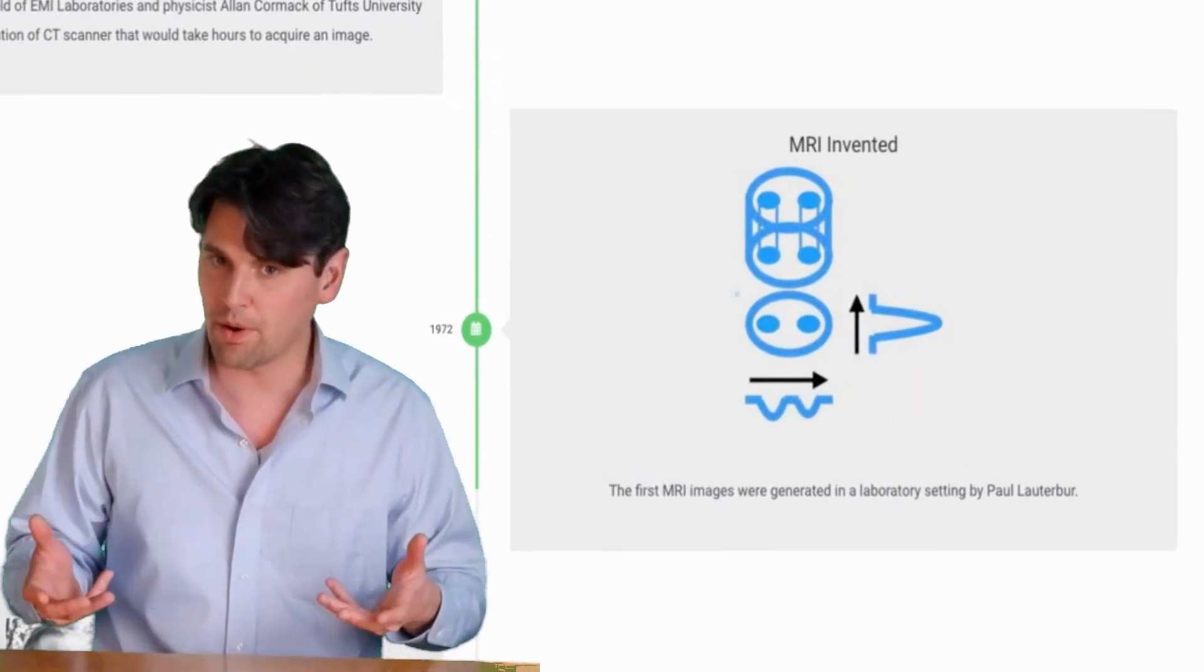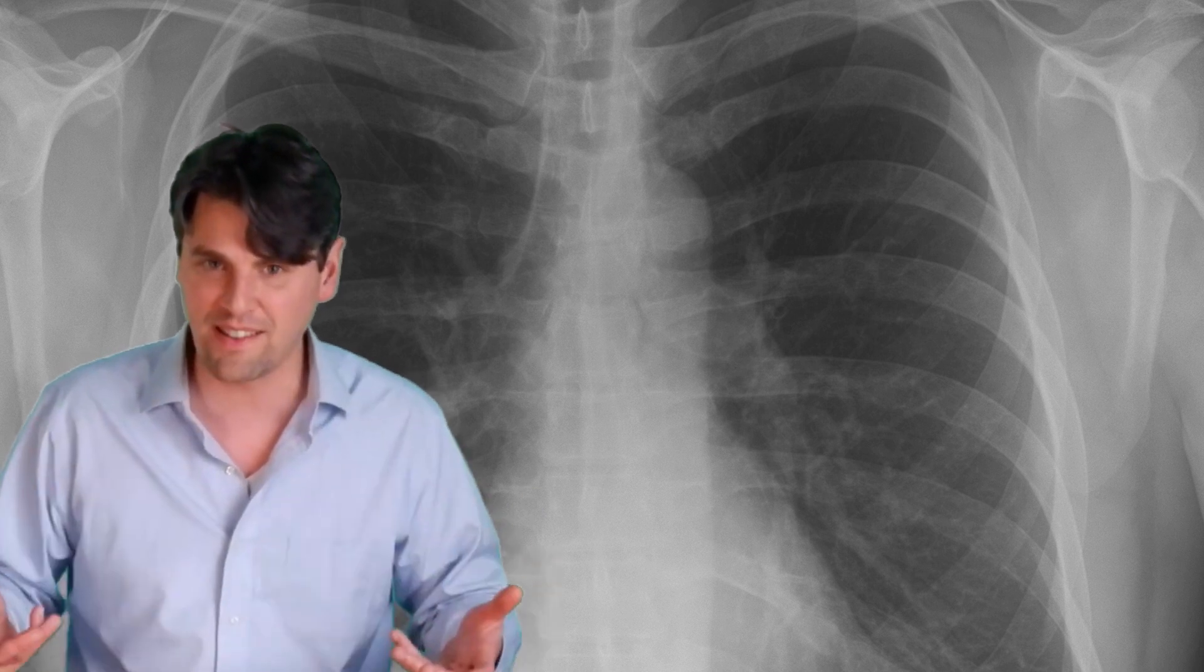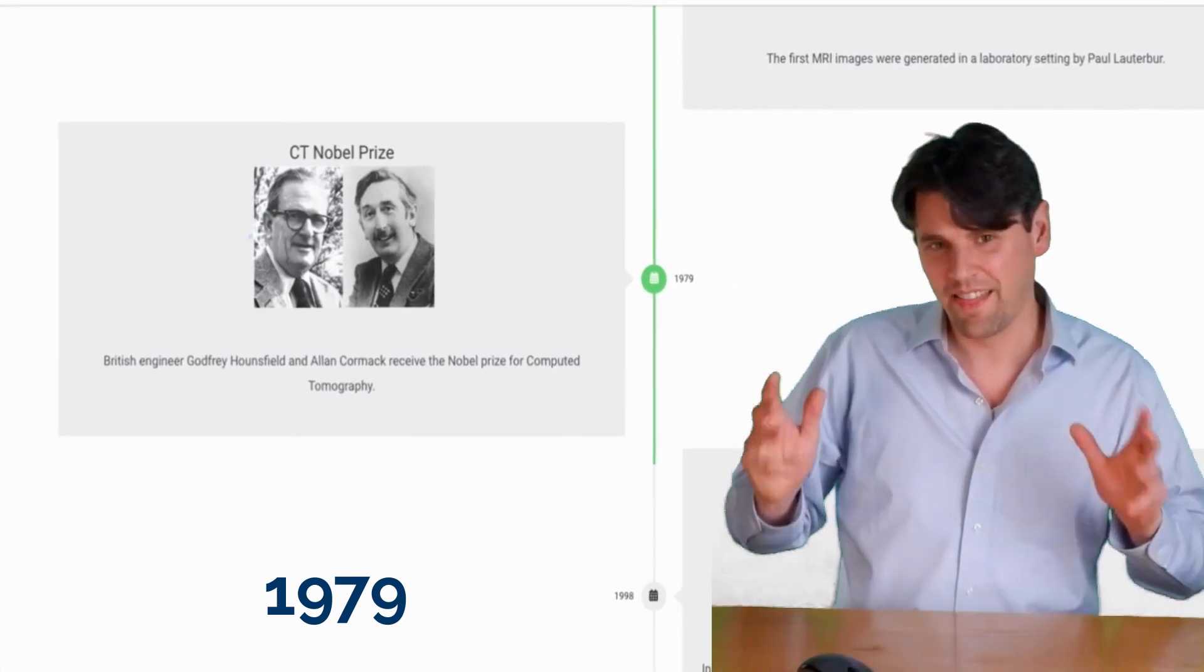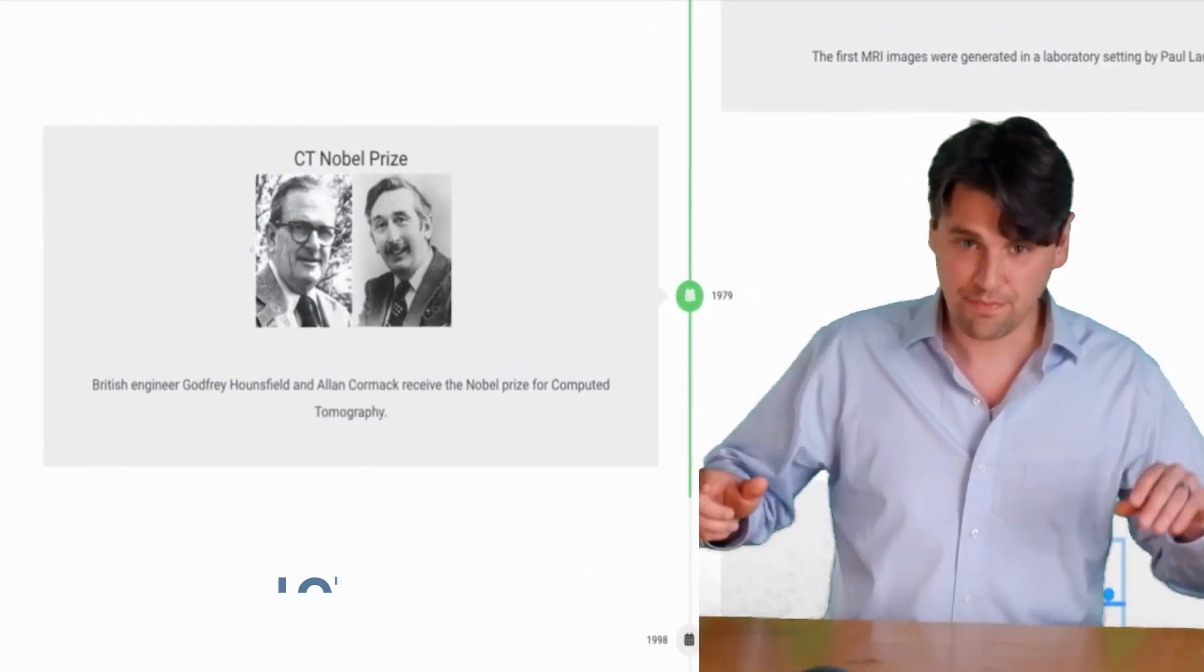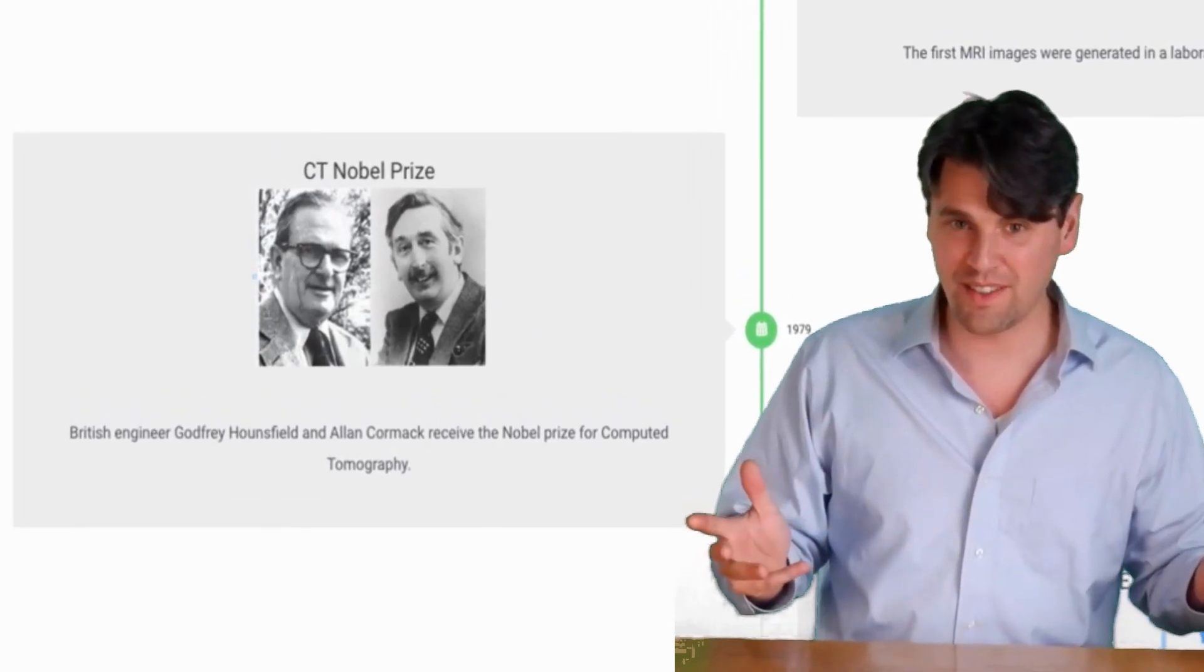Applying gradients to have changes in the magnetic field such that projections through the object could be measured. 1979, I'm particularly fond of that year as my birth year. That was the year that Cormack and Hounsfield got the Nobel Prize for CT.